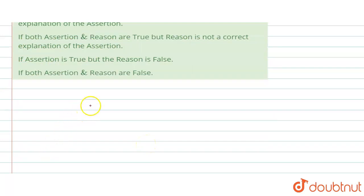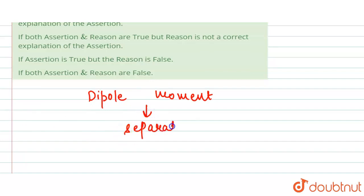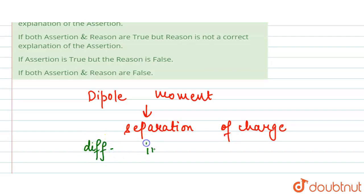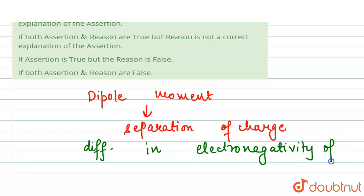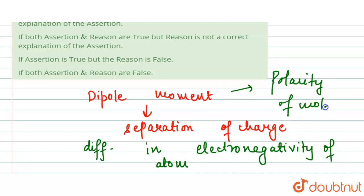Dipole moment occurs where there is a separation of charge. This separation can occur between two ions in an ionic bond or between two atoms in a covalent bond. It arises from the difference in electronegativity of the atoms. Basically, dipole moment is a measure of the polarity of the molecule.